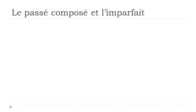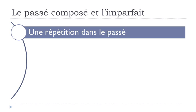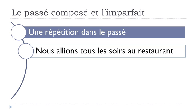Not so far from the habit concept is une répétition dans le passé — something that repeats itself in the past. If you want to express something that repeats itself in the past, you should use l'imparfait. The example: nous allions — aller means to go — tous les soirs, every evening, au restaurant. So: nous allions tous les soirs au restaurant.